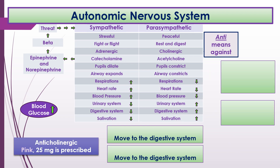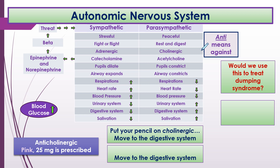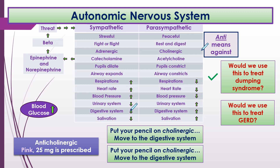Let's try this with another medication — the anticholinergic pink. Would we use this to treat dumping syndrome? Put your pencil on cholinergic and move to the digestive system — it slows down, so yes, we would use this to treat dumping syndrome, because it slows digestion allowing more nutrient absorption. Would we use this to treat GERD? Put your pencil on cholinergic and move to the digestive system — it slows down, so no, we would not use this to treat GERD.